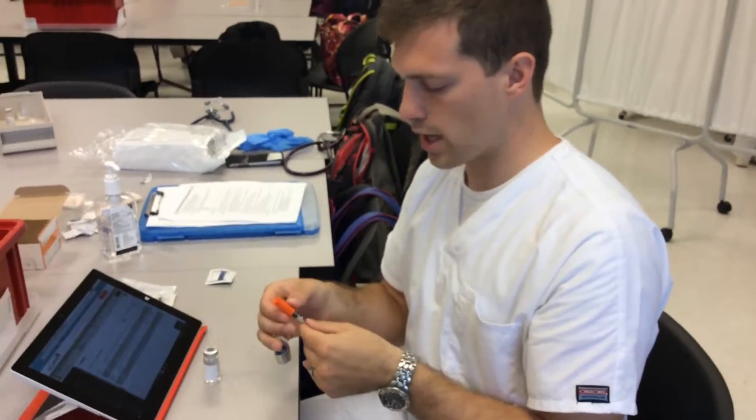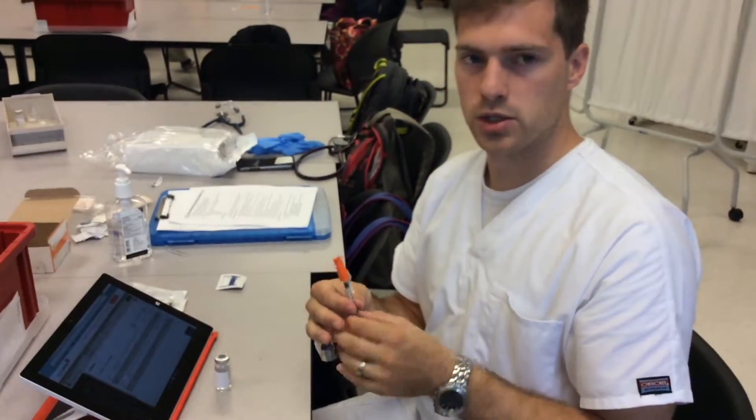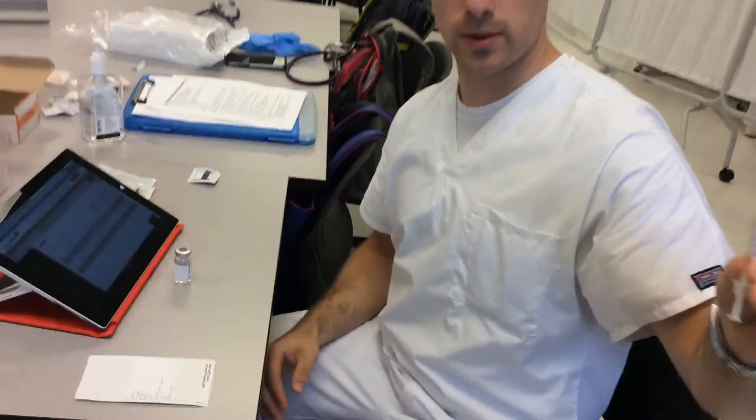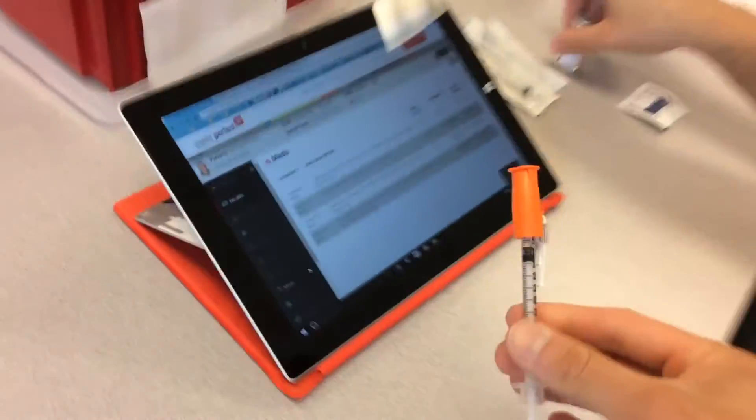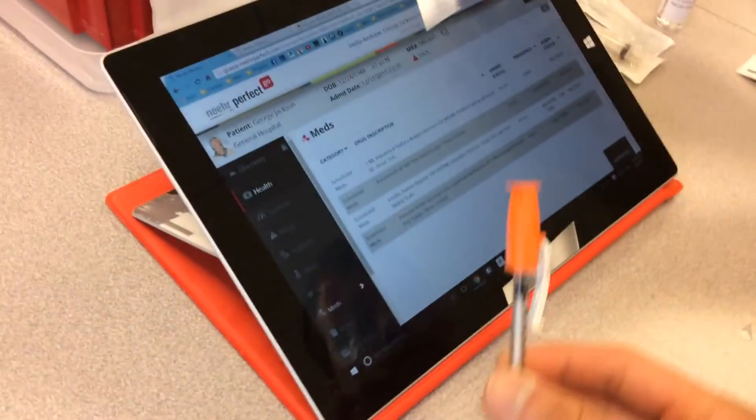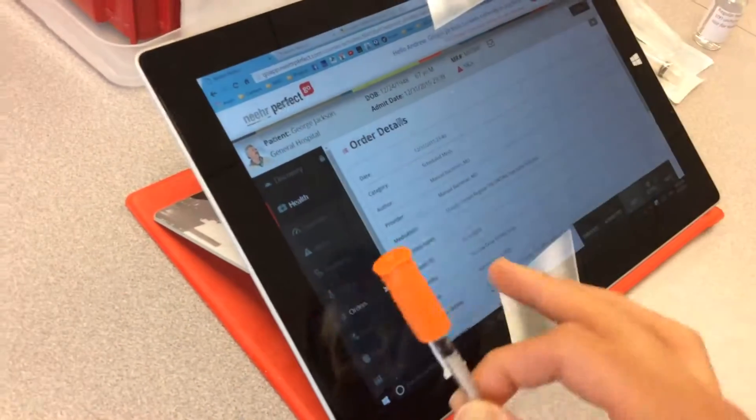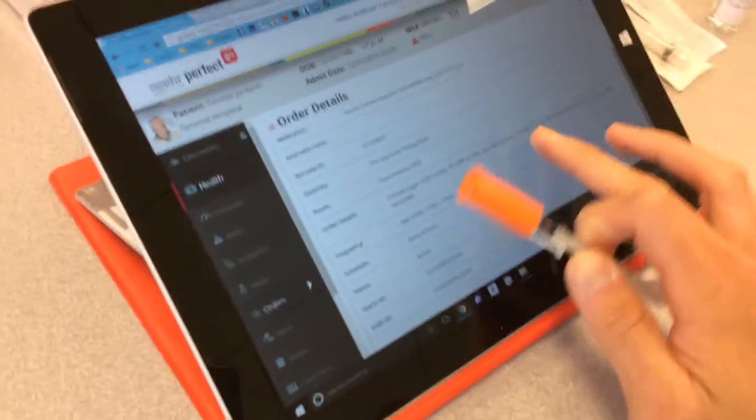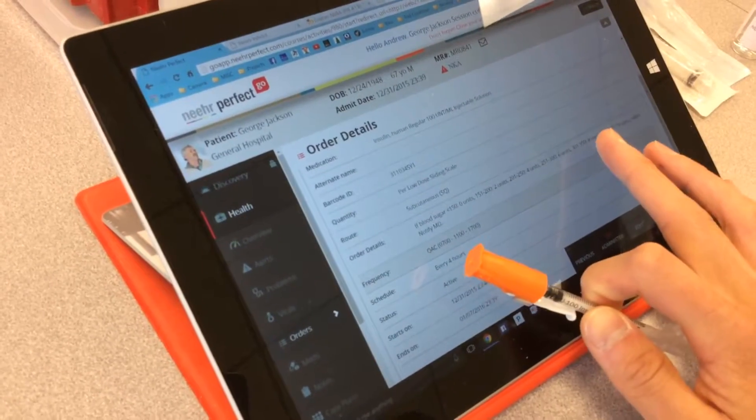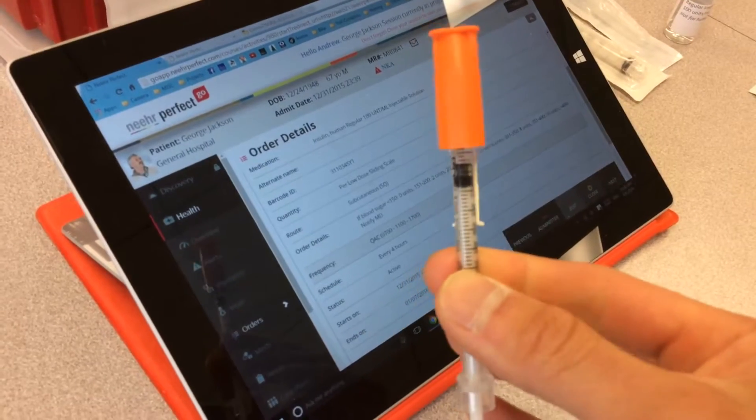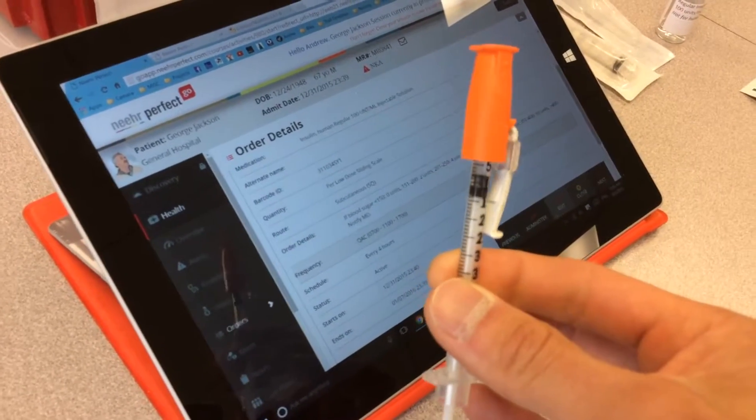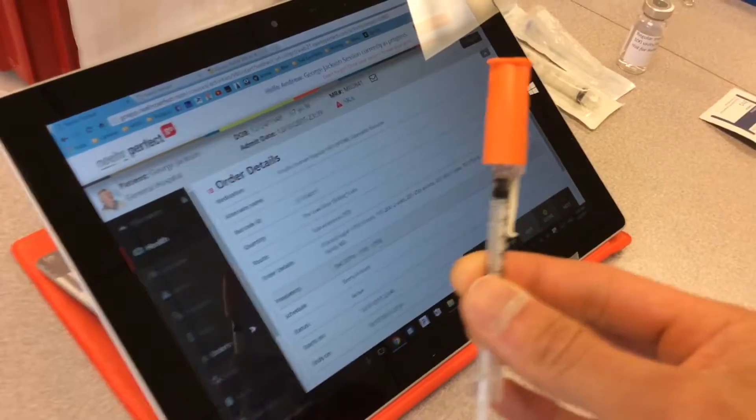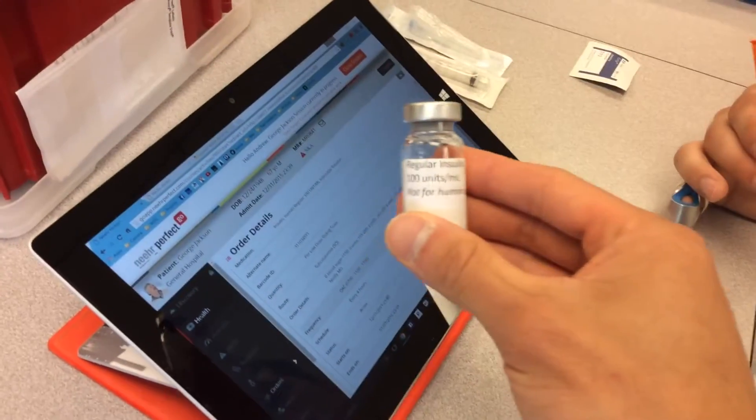And now I'm going to have another nurse check this because insulin is a high alert medication. Would you check this for me? Yes, of course. What's the patient's blood glucose level? 323. So 323 is going to be eight units, and I have eight units right there. With the right vial. Thank you very much.